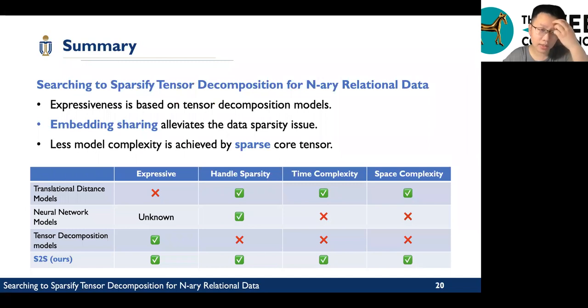Here is a summary about our models. First, we achieve expressiveness because we are based on tensor decomposition models and we also provide the proof in the paper. Second, embedding sharing alleviates the data sparsity issues. Third, less model complexity achieved by the sparse core tensor.